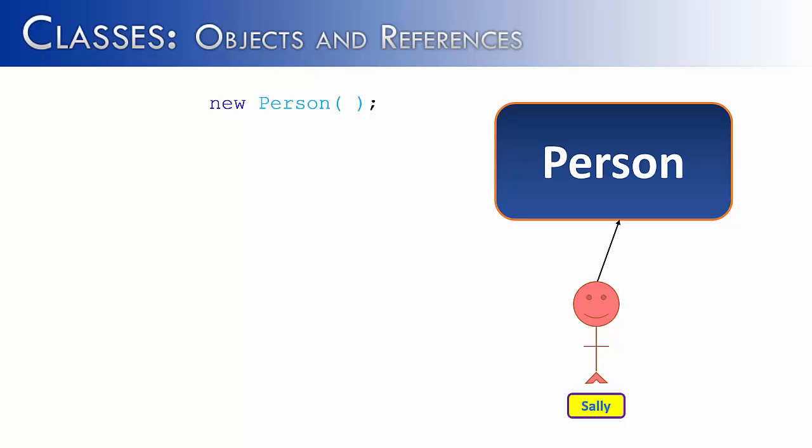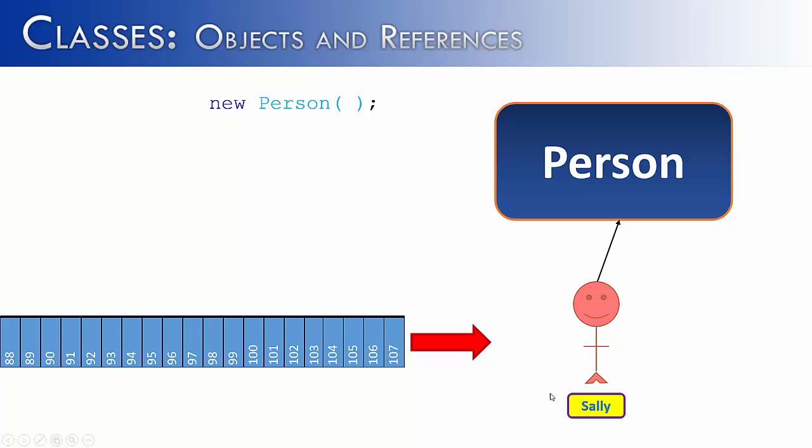And in order to do that, I'm going to take away the first part and just leave new person there. And let's talk about what this new person part of the code is doing. So if you could imagine memory as a bunch of index slots. So you see, we start at 88 and we're going to 107. I just have the arrow there to indicate that it keeps on going. And so what the new person part of the instantiation process is doing is it's creating a person in memory. And so we can see that 97 through 102 now hold a person object. Now this isn't very useful for us if we don't know where that's located.